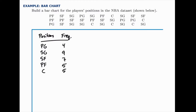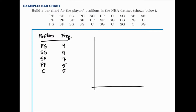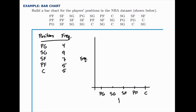Just like with the histogram, we start with our grid. This time the horizontal axis will represent our categories, so we'll have five spots for our bars. The vertical axis will again represent frequency. The highest frequency we see is nine, so we need to go up to at least nine — let's go to ten.